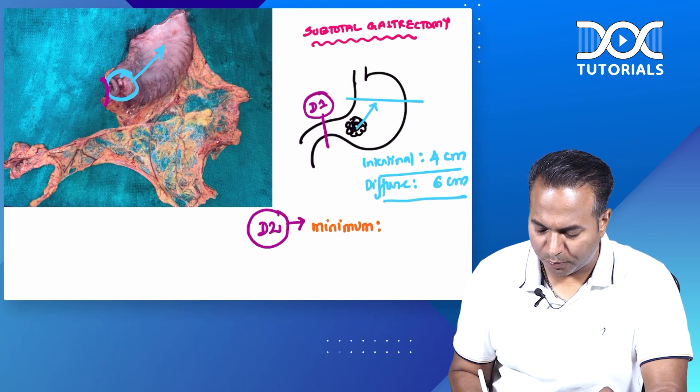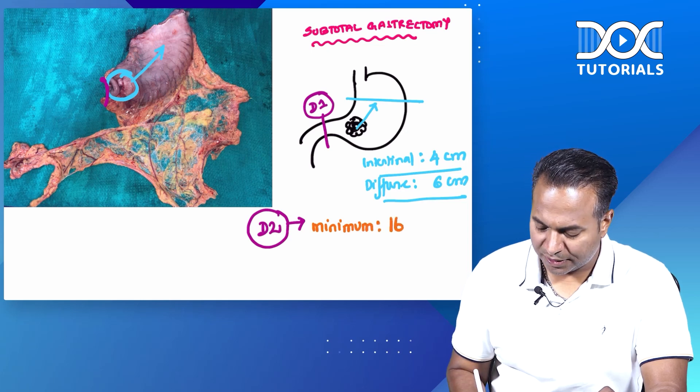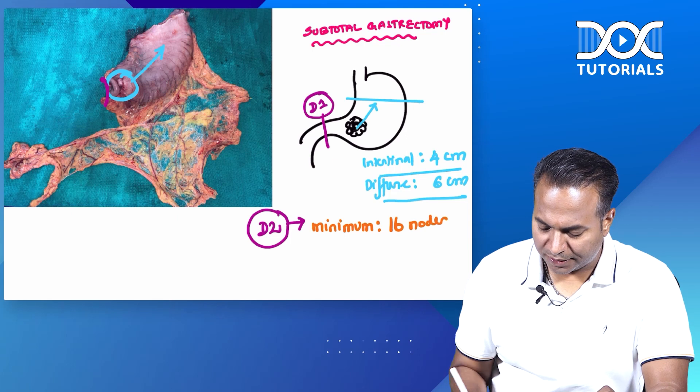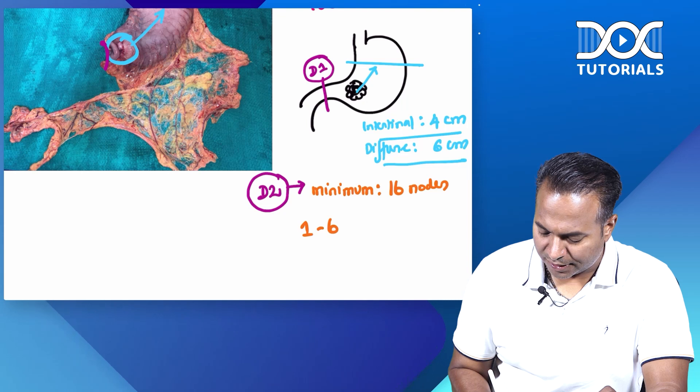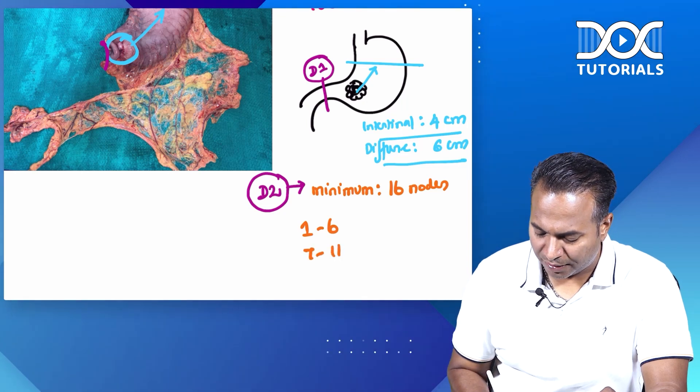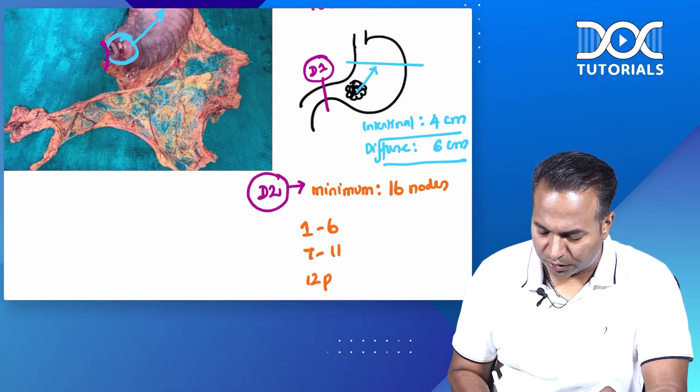The minimum number of nodes in D2 gastectomy is 16 nodes. The station of nodes that will be removed is 1 to 6, 7 to 11, and 12p. These are the nodes removed in subtotal gastectomy: stations 1 to 6, 7 to 11, and 12p.